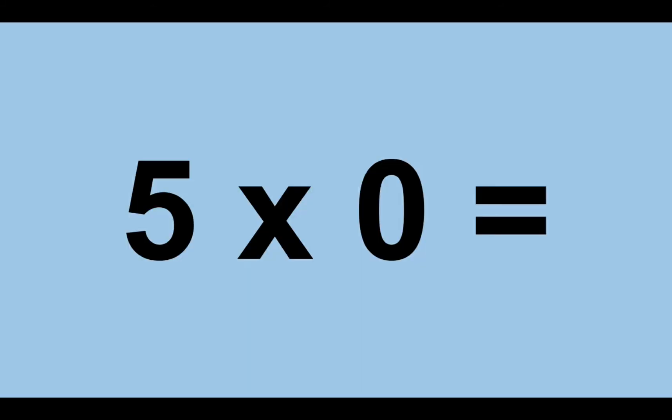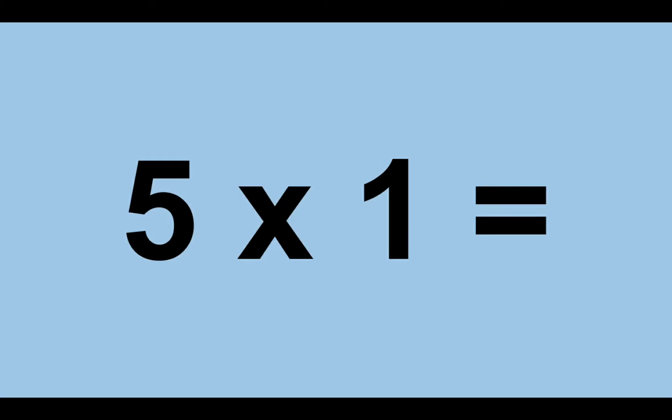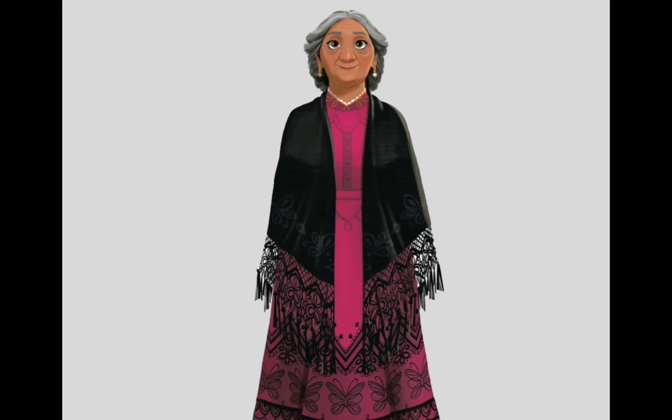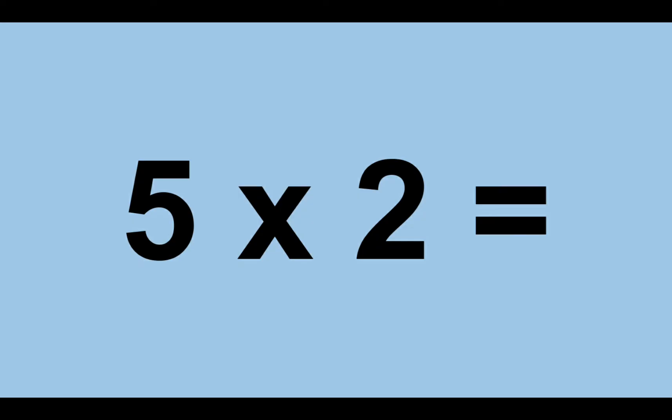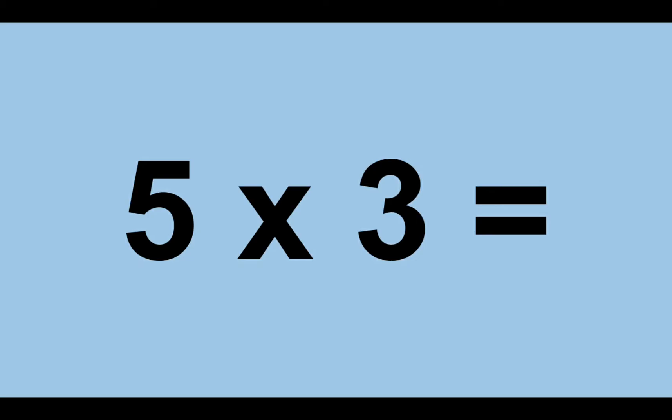Five times zero equals zero. Five times one equals five. Five times two equals ten. Five times three equals fifteen.